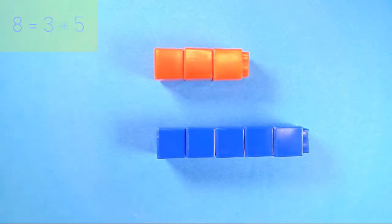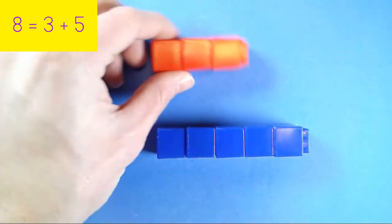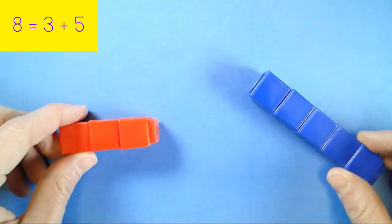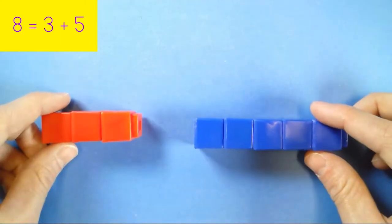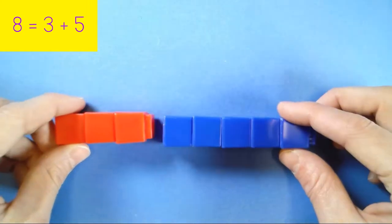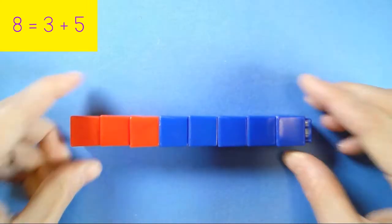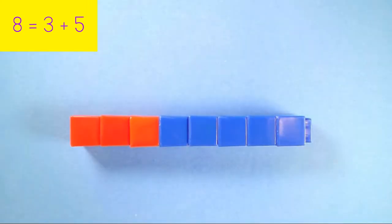The first one was 8 equals 3 plus 5. Here's 3. Here's 5. If 3 and 5 are added together, how many connecting cubes are there? 1, 2, 3, 4, 5, 6, 7, 8. 8 equals 3 plus 5.